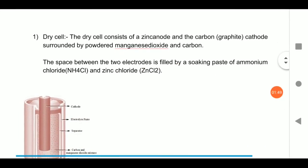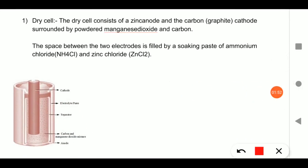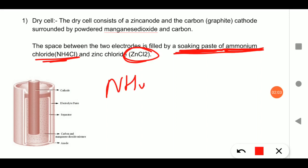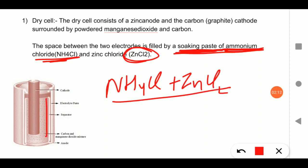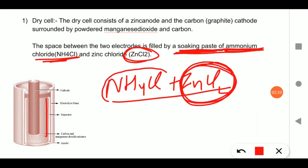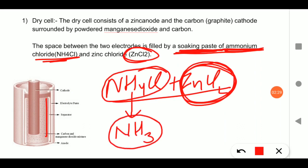The space between the two electrodes — between zinc (anode) and the graphite (cathode) — contains a soaking paste of ammonium chloride (NH4Cl) and zinc chloride (ZnCl2). The board exam has frequently asked: what is the role of ZnCl2?